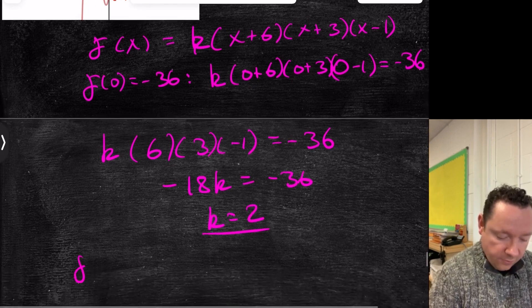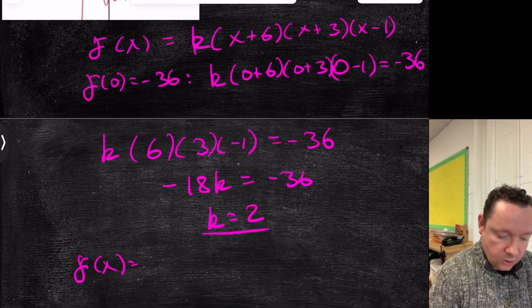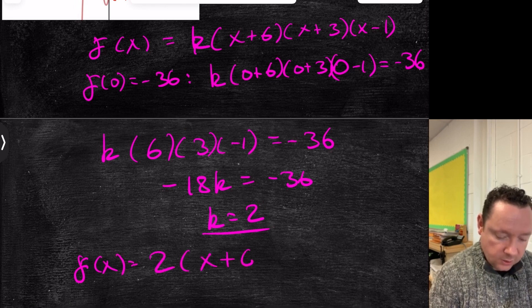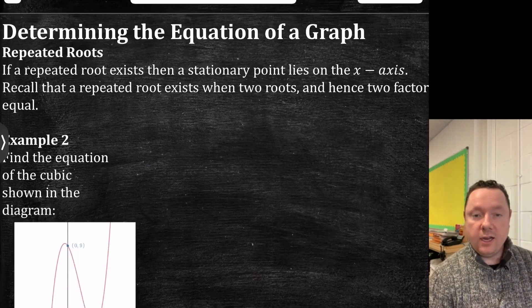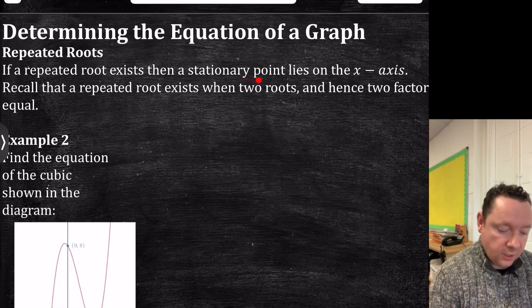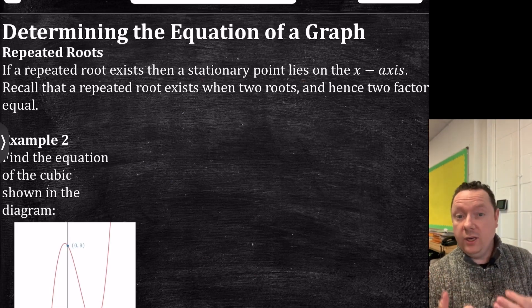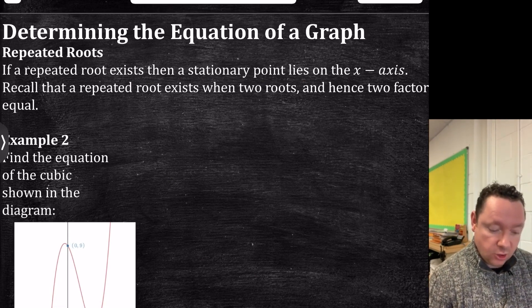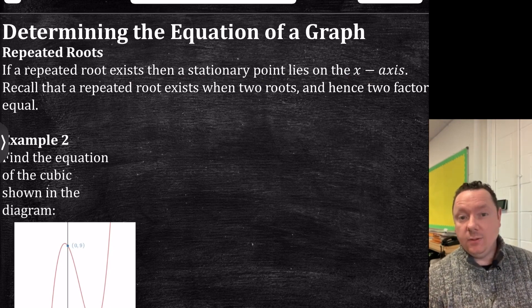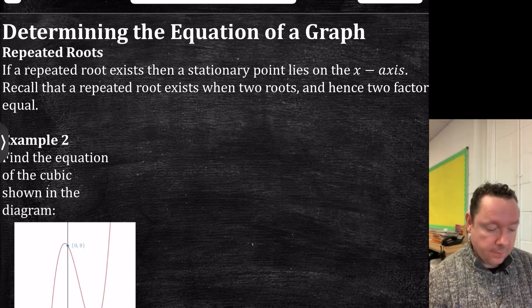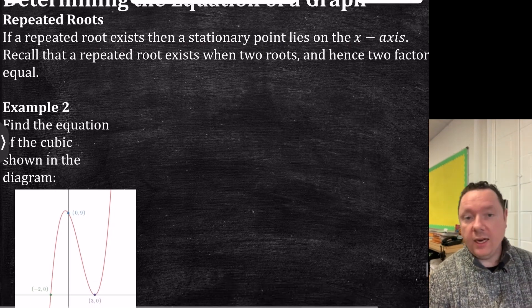So that means that f of x, to answer the question, is 2 times x plus 6, x plus 3, x minus 1. Obviously, the order of these brackets are not important at all. In the term of the equation of the graph, we've got repeated roots. If a repeated root exists, then the stationary point is obviously on the x-axis. And what that means is, we should know this already, a repeated root means it's essentially two roots which are the same. The two factors are equal.